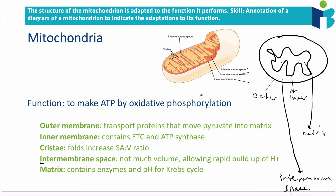The inner mitochondrial membrane is folded into structures which we call cristae — these little folds. So those are the different parts of the mitochondrion. Now, how is the outer membrane adapted to the function of the mitochondria?